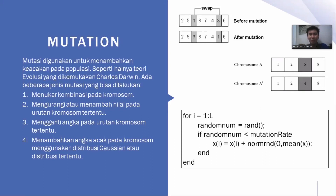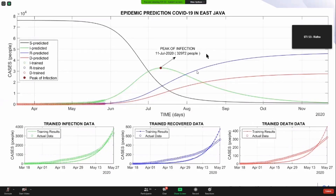That's why kita butuh mutation. Mutation ini mirip juga dengan cross-out, tapi bedanya tanpa melibatkan individual line. Kayak train sama case-nya di dataset-nya. Oke, siap, siap.